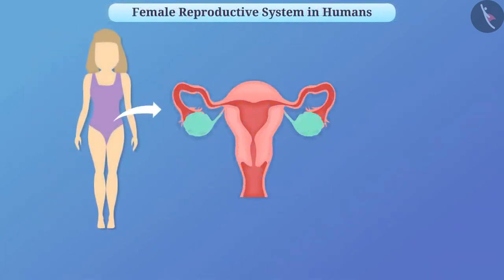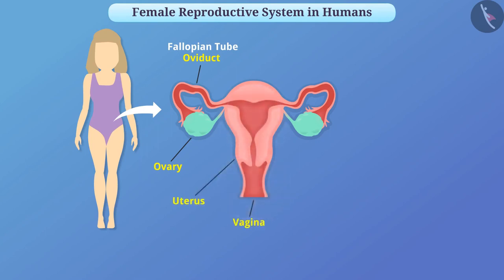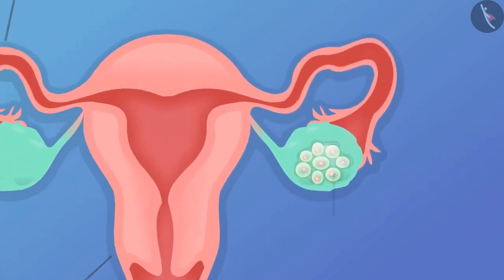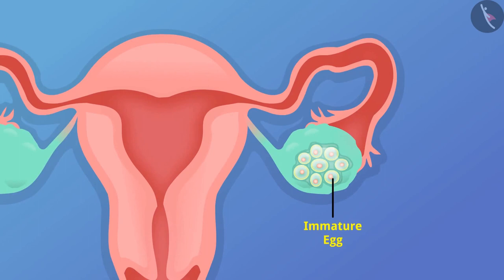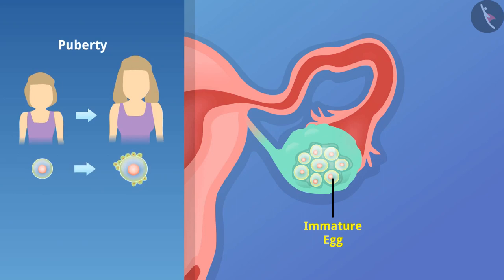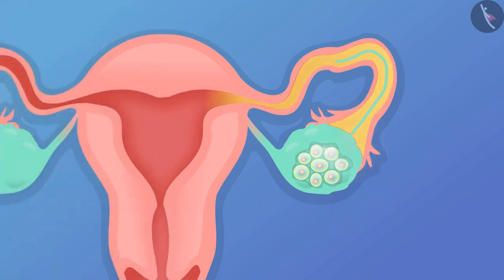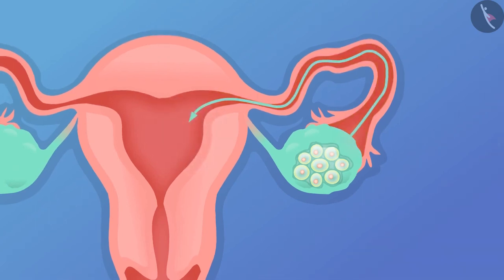Now let's understand the female reproductive system in humans. The female reproductive system consists of ovaries, oviducts which are also known as fallopian tubes, the uterus, and the vagina. A female germ cell called an egg cell is formed in the ovary. Various hormones such as estrogen are also produced in the ovaries. From the birth of a girl, there are many immature eggs present in the ovaries which begin to mature at puberty. An egg is matured by one of the two ovaries every month.